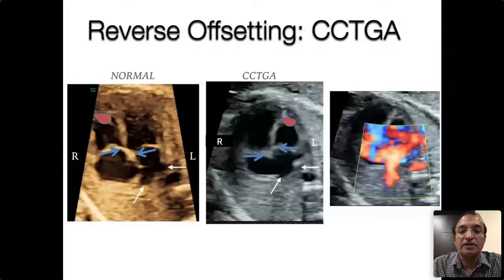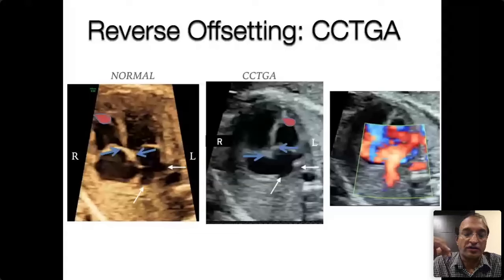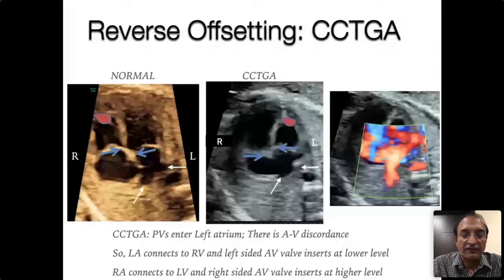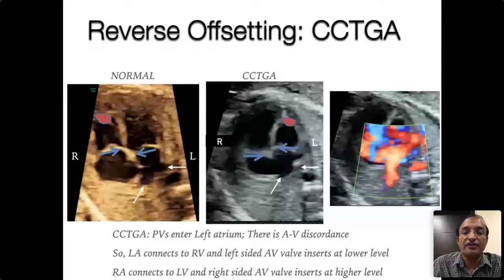In CC-TGA there is atrioventricular discordance. The pulmonary veins drain to the left atrium, as shown by the arrows, but the left atrium connects to the right-sided ventricle, so the left AV valve inserts at a lower level. The right atrium connects to the left-sided ventricle, and hence the right-sided AV valve inserts at a higher level. That is how you distinguish a normal four-chamber view from reverse offsetting in CC-TGA.